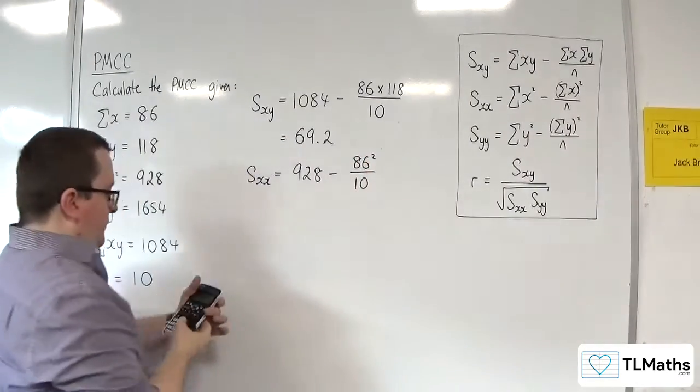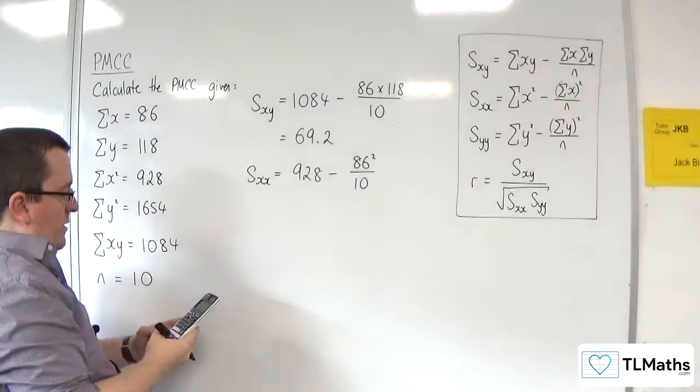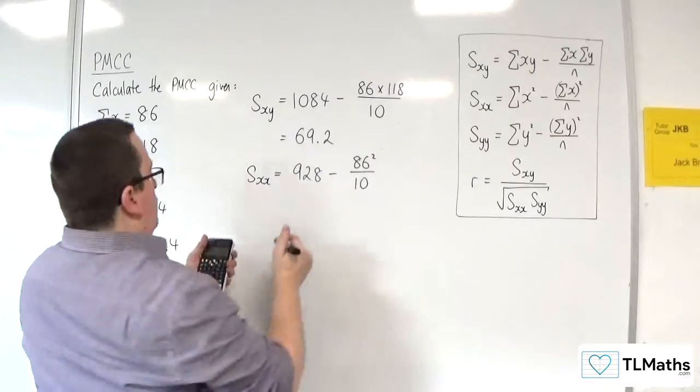So 928 take away 86 squared divided by 10, which is 188.4.